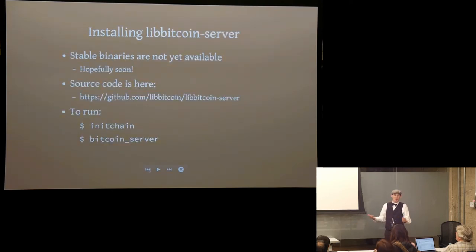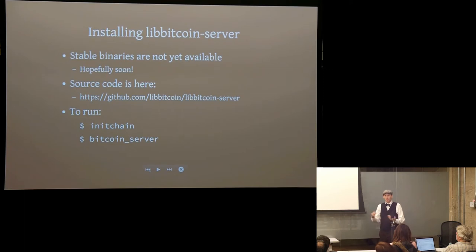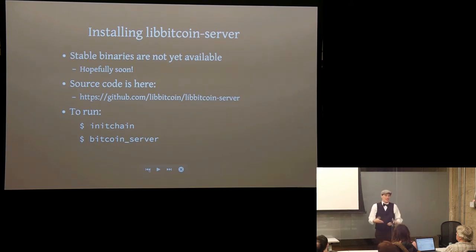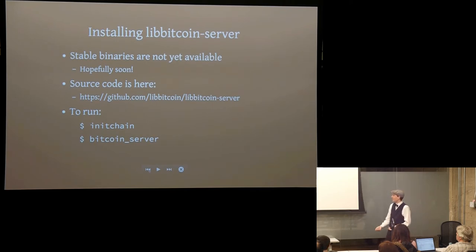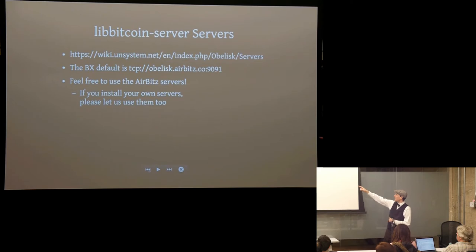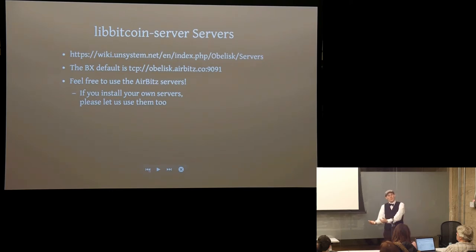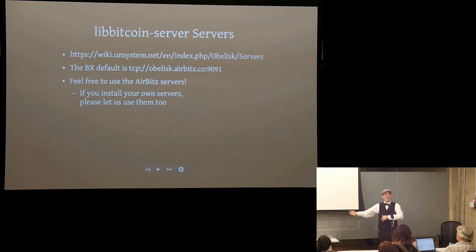To use BX you need a LibBitcoin server. There's no easy binary download for the server yet — you run install.sh, then call initchain, then bitcoinserver, and it syncs the blockchain over about 20 hours. Alternatively, you can use an existing server from the list on the UnSystem Wiki. One is built into BX by default — an AirBits server, available for everyone to use, no questions asked. In return, AirBits would appreciate it if you'd allow them to use your server too, making the network more decentralized.